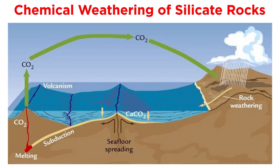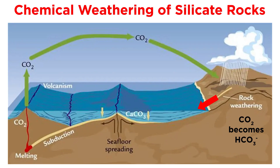The chemical weathering of silicate rocks is the most important long-term mechanism for removing carbon dioxide from the atmosphere via its conversion to bicarbonate and eventual transport to the ocean basins, where it reacts with calcium to form calcite, then sinking down to the bottom of the ocean where it is stored for eons.